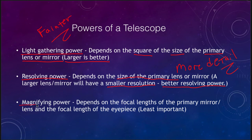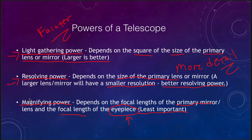Finally, we have magnifying power, which is the least important of the three telescope powers. It depends on the focal length of the primary mirror or lens and the focal length of the eyepiece, meaning you can change it by changing the eyepiece. Magnifying does not change the light gathering power or the resolving power. When you magnify something faint, you're spreading out the light even more, and a faint object may not even be visible if magnified too much. Resolving power also does not improve with magnifying power — you still cannot see any more detail.